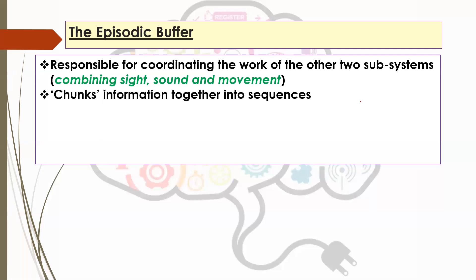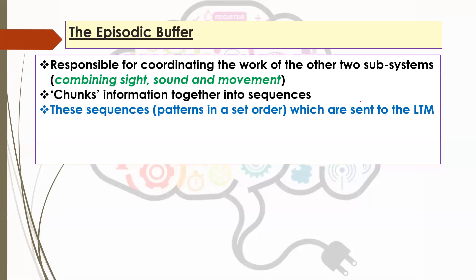You've got some information coming through from the phonological loop and, from the same situation, information processed in the visuospatial sketchpad — that then comes together to form something more meaningful. It's the episodic buffer that does that coordinating. One of the crucial things it does is put this together in a set order or sequence, placing a sort of time frame on it that makes it more straightforward as a memory trace to be then sent to the long-term memory. If it were just lots of random bits of information, it would be confusing for the long-term memory to work out what action to take.